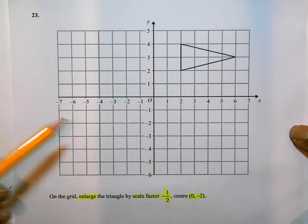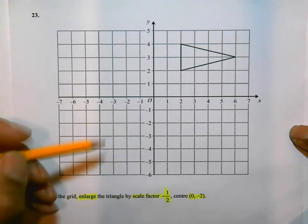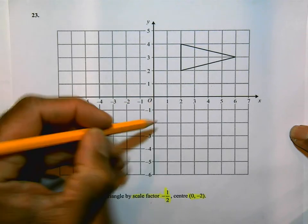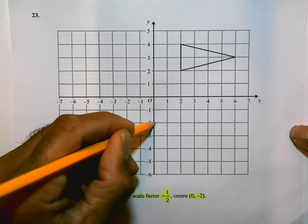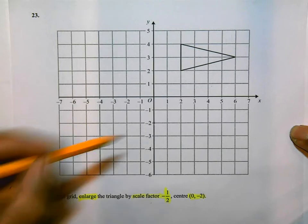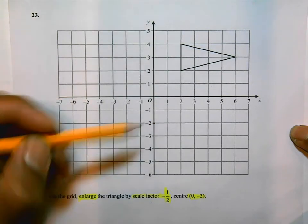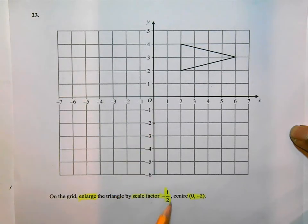Let's see. We're going to enlarge this. Let's find the center of enlargement. 0 minus 2 is going to be there. And because we're going to enlarge it by a scale factor of minus a half, the minus a half means that the enlarged shape is going to be on the other side of this.